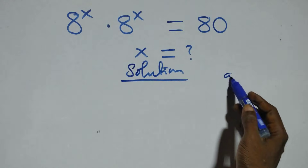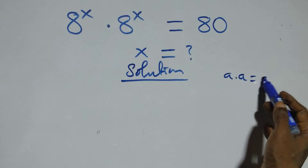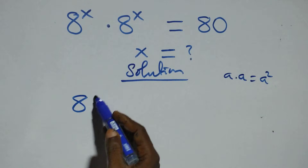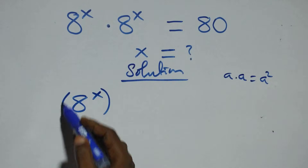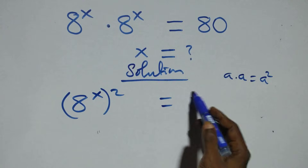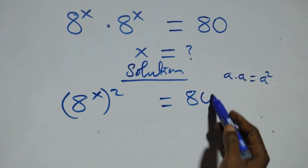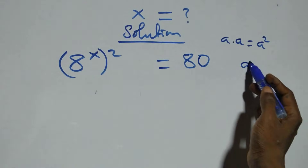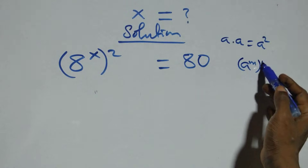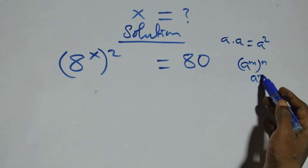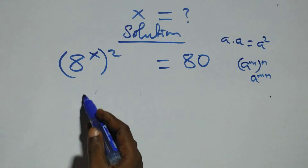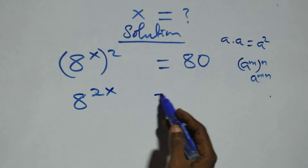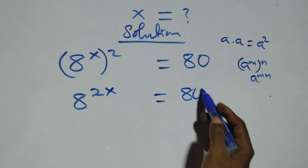This follows: we have a times a, which can be written as a squared. Multiplying here, we have a raised to the power x squared, which gives us a raised to the power 2x equals to 80.